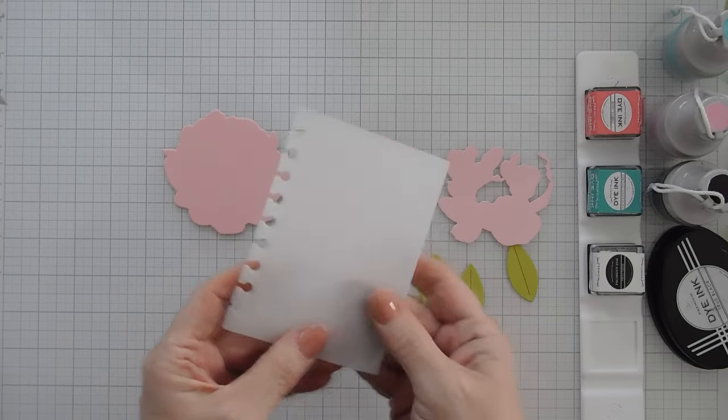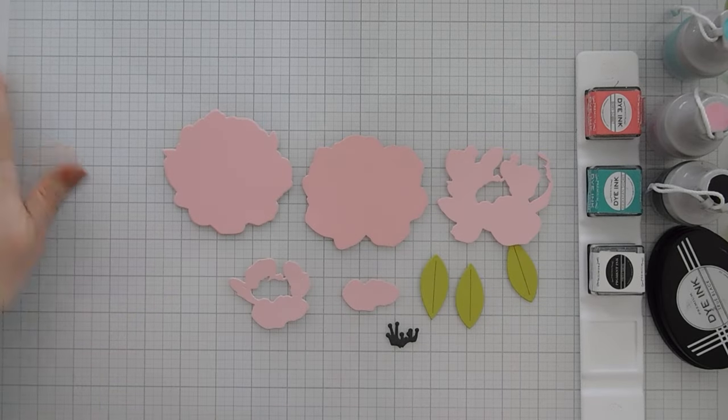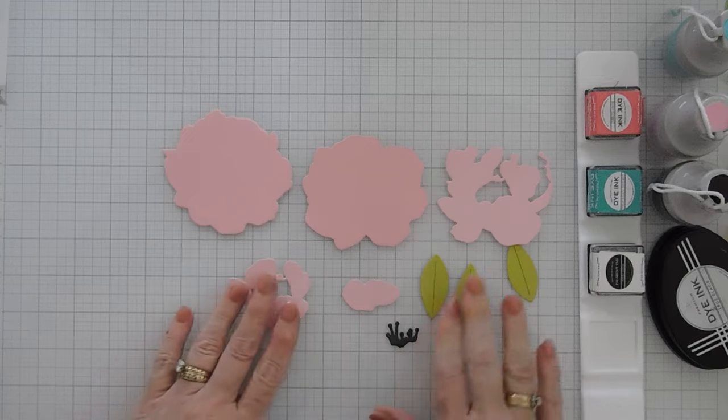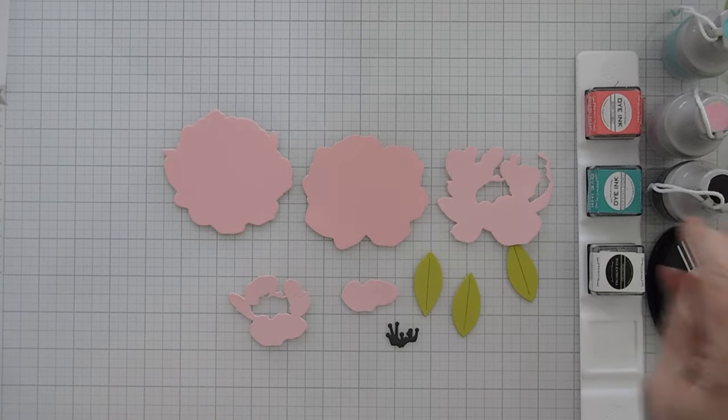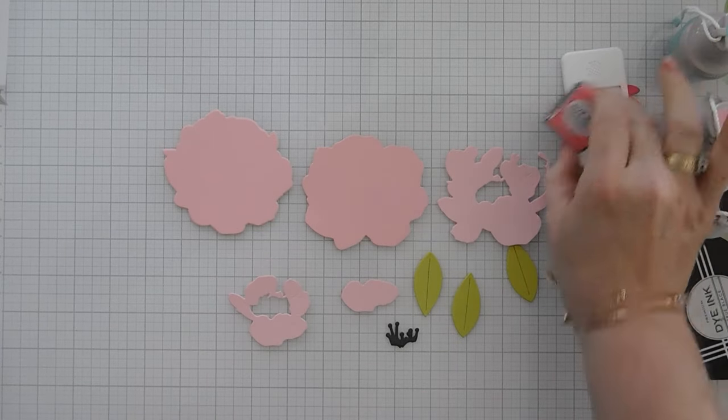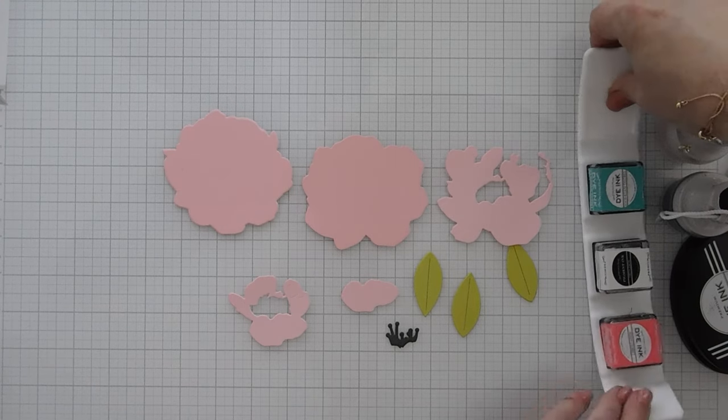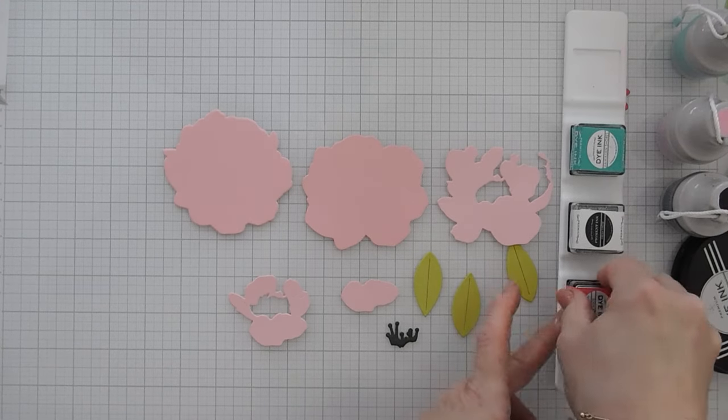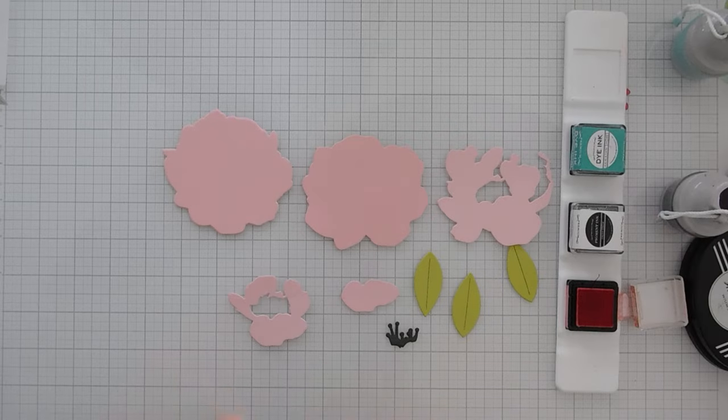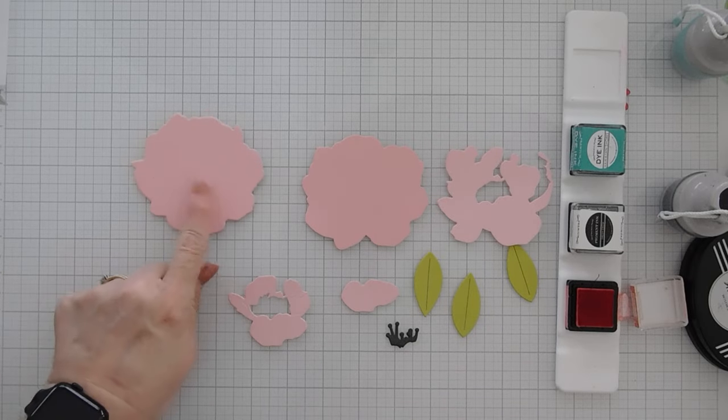We're going to set my vellum notebook paper aside and we're going to do a little ink blending on our bloom. I have some paper tray ink berry sorbet ink, and we're going to add some color. Not to the, this is the base, okay.